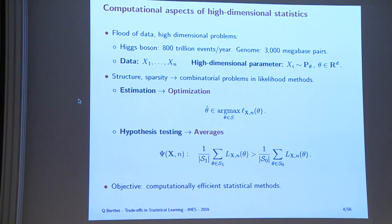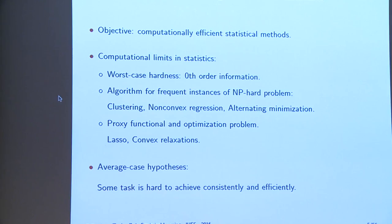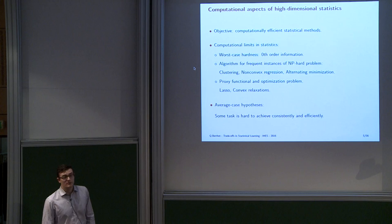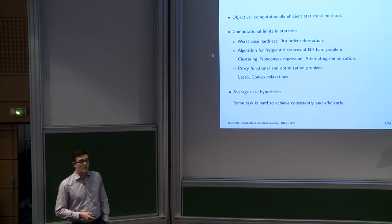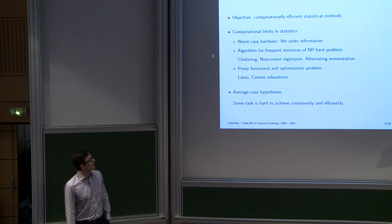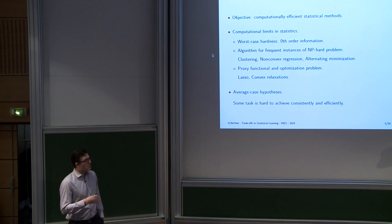This is a barrier when our objective is to do computationally efficient statistics. We want to be able to tell a practitioner what's going to happen when they put a method in their computer. In order to do statistics in a computationally efficient way, worst-case hardness in a likelihood problem is more or less a zero-order piece of information — it tells us that our first idea is not going to be possible all the time. But it doesn't say much more. It's possible that there is an algorithm that exists and will work for frequent instances of an NP-hard problem. In clustering, non-convex regression, a lot of the time we can do stochastic gradient descent or alternating minimization, and if the right conditions hold, we can solve these problems for many instances.